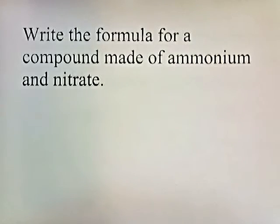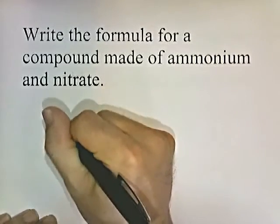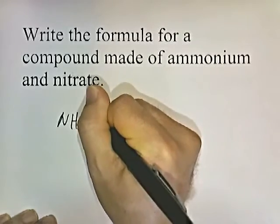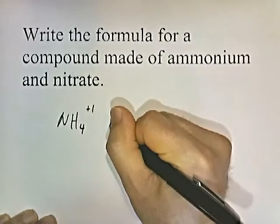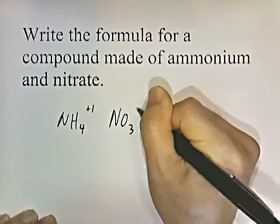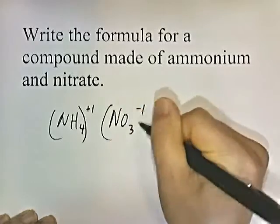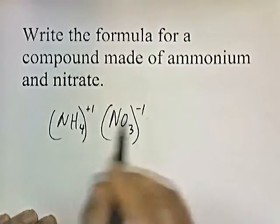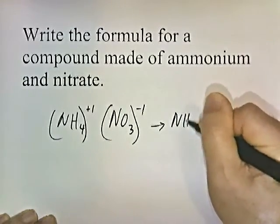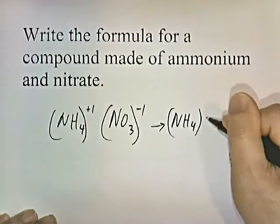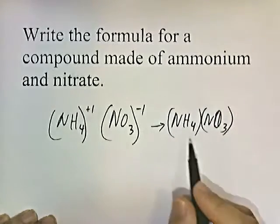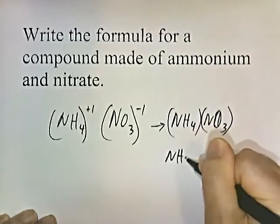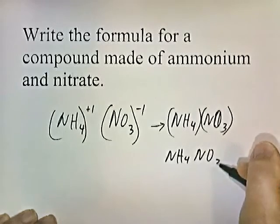Write the formula for a compound made out of ammonium and nitrate. Ammonium is NH4 with a plus one charge. Nitrate is NO3 with a negative one charge. Since these have equal and opposite charges, they just go together: NH4NO3.